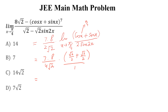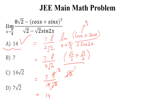Now simplify: 7 times 8 divided by 4*sqrt(2) times sqrt(2). The sqrt(2) cancels, 4 times 2 is 8, so we get 7 times 8 divided by 8 equals 14. This is the correct answer. Like the video, share with your friends, and don't forget to subscribe to my YouTube channel.